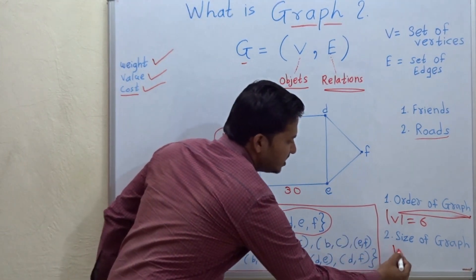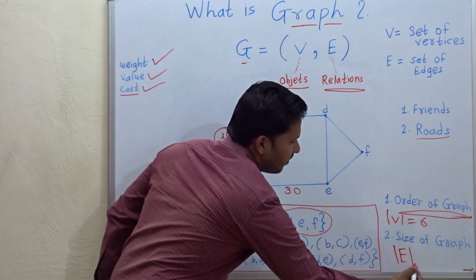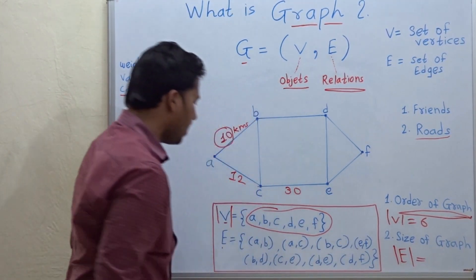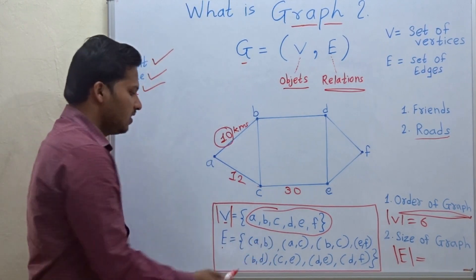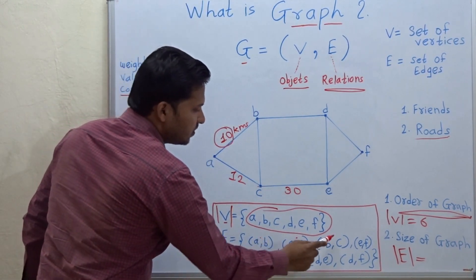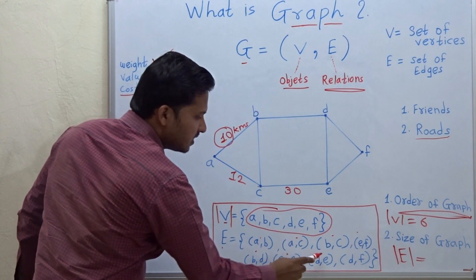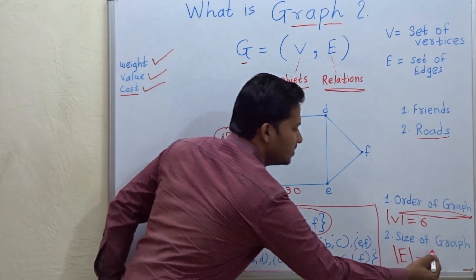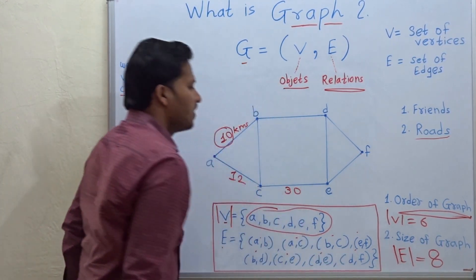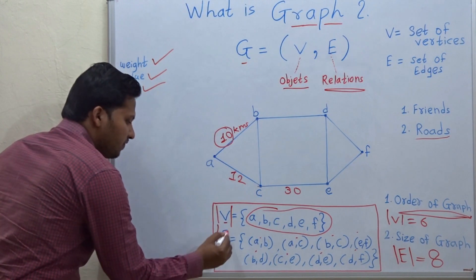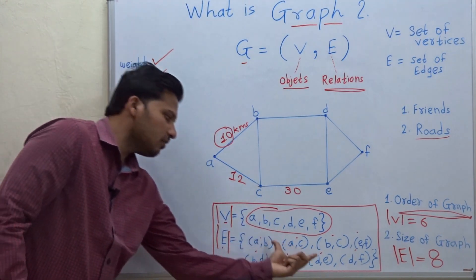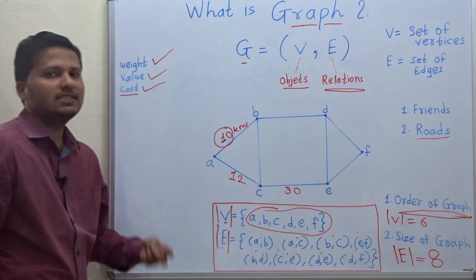Now let us see the number of edges means the size of the graph. So size of the graph is the number of edges. So see, 1, 2, 3, 4, 5, 6, 7, 8. So the size of this graph is 8. Means the modulus of E is 8. Means the number of elements in this set is 8.